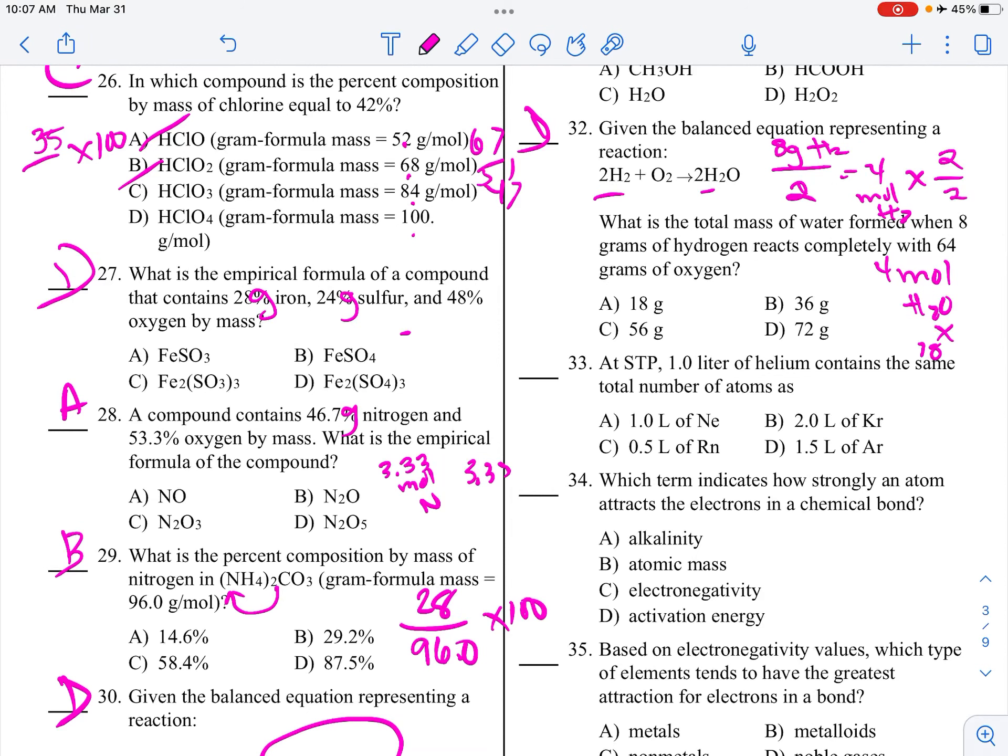At STP, 1 liter of helium contains the same number, this is Avogadro's hypothesis, which states, if you have a gas with the same temperature, volume, and pressure, which this is temperature and pressure, and that's volume, you're going to have the same number of atoms in the same volume, so there you go.